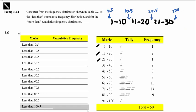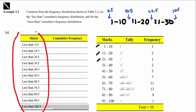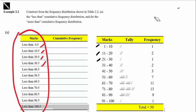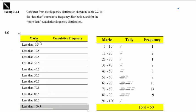For the cumulative frequency distribution, you write down all the boundaries: less than 0.5, less than 10.5, less than 20.5, less than 30.5, and so on until less than 100.5. We begin calculating. First, we count how many students score less than 0.5 marks. Since no student scores less than 0.5 marks — the minimum is between 1 to 10 — there are 0 students scoring less than 0.5 marks.